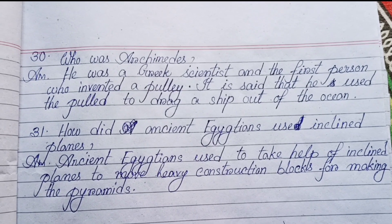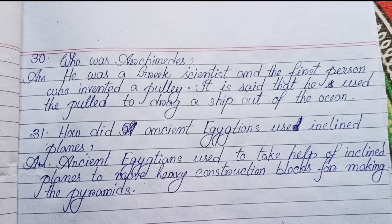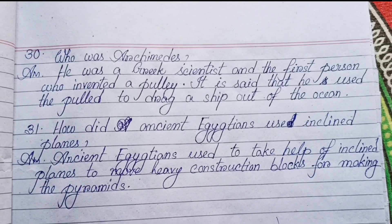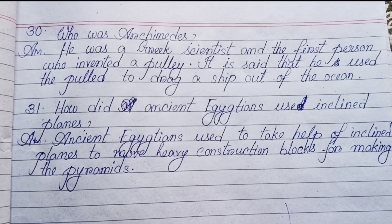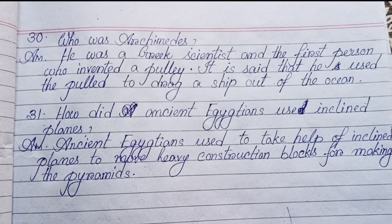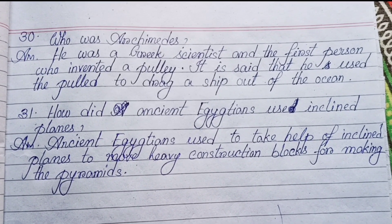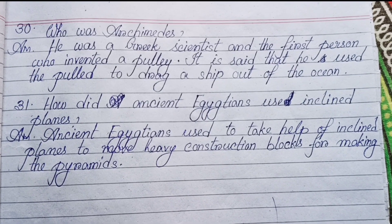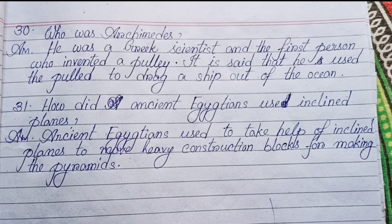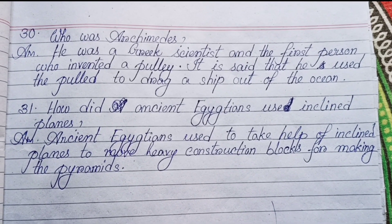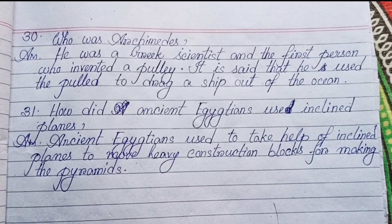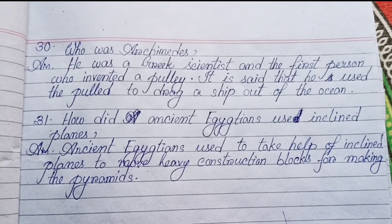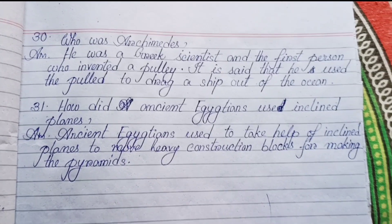Number thirty-one: Who was Archimedes? He was a Greek scientist and the first person who invented a pulley. It is said that he used the pulley to drag a ship out of the ocean. Number thirty-one: How did ancient Egyptians use inclined planes? Ancient Egyptians used to take help of inclined planes to move heavy construction blocks for making the pyramids.